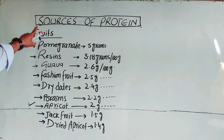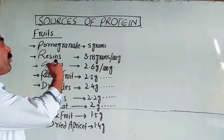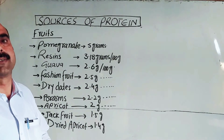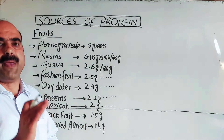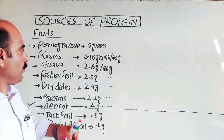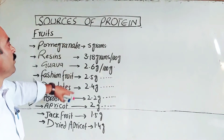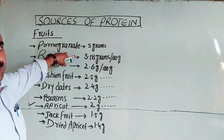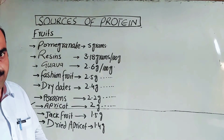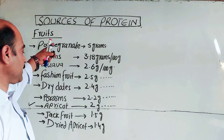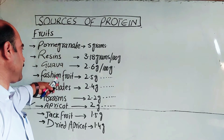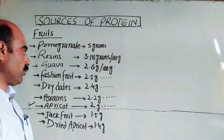So these are the top fruits in terms of protein content. These are dry fruits and regular fruits listed in descending order of protein content.